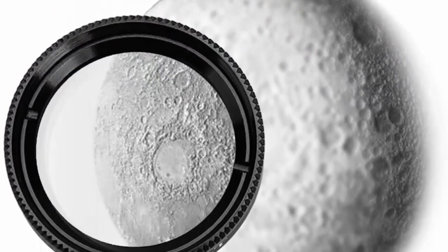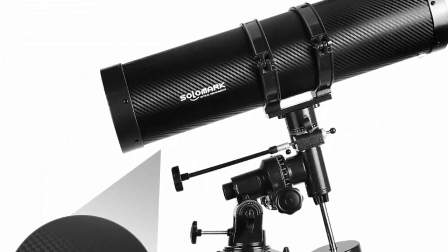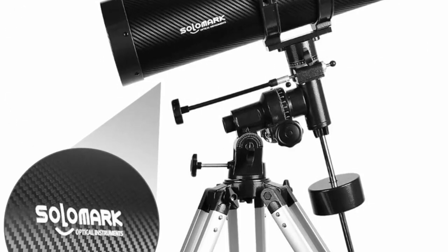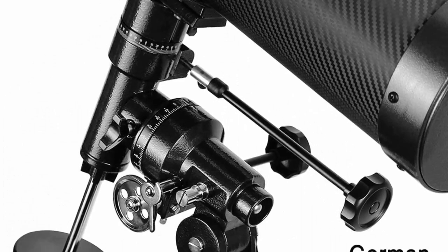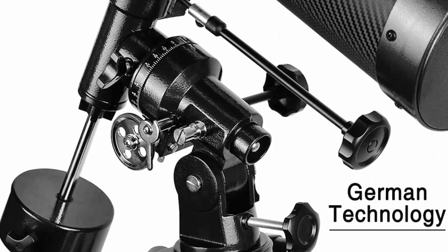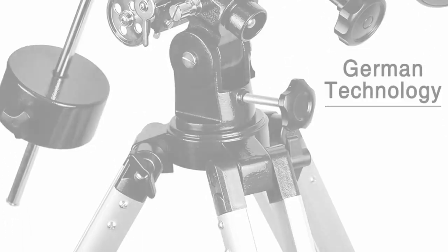Includes a 25mm Sirius Plossl 1.25-inch eyepiece, 6x26 correct image finder scope, 45 degree correct image diagonal, soft carry case, Starry Night software, and more. Does not include tripod or mount, either can be purchased separately.